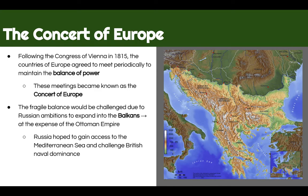Let's review a little bit. The Congress of Vienna, if you remember, began in 1815, and that was a response to Napoleon's romp around Europe where he decided he wanted to conquer everybody. So Europeans defeat Napoleon, and they want to establish a balance of power. They decide to meet periodically in order to maintain this balance, and we call these meetings the Concert of Europe.